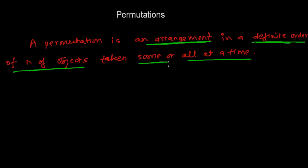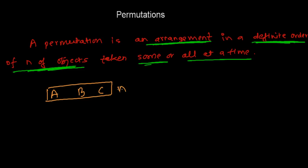These five highlighted points you have to understand properly. A permutation is an arrangement in a definite order — in a fixed way — of n objects taken some or all at a time. Let me give an example: let's say we have a, b, and c. This is n number of objects and we are going to take only two at a time.